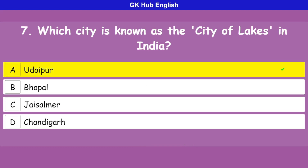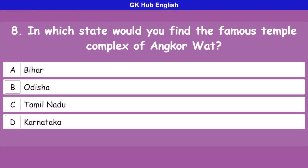Question 8: In which state would you find the famous temple complex of Angkor Wat? Option A is Bihar, option B is Udaipur, option C is Tamil Nadu, option D is Karnataka. Correct answer is Karnataka.